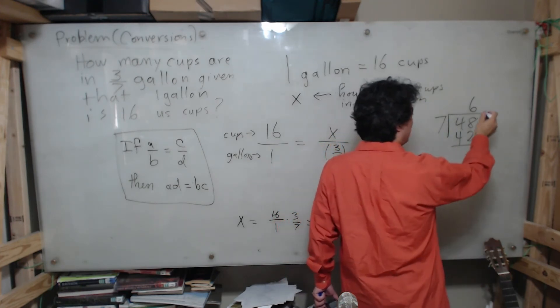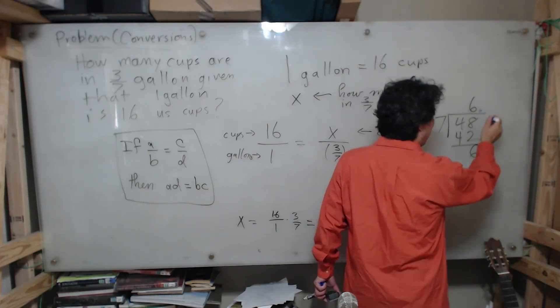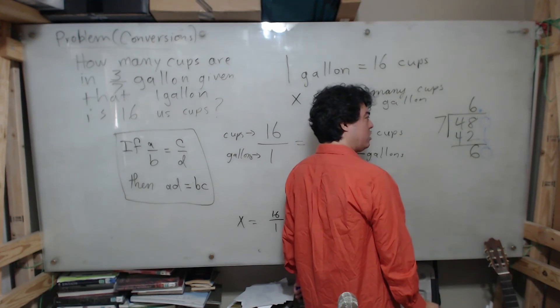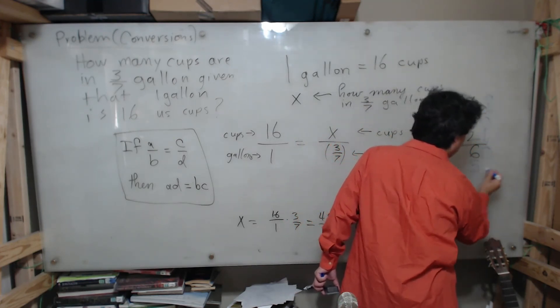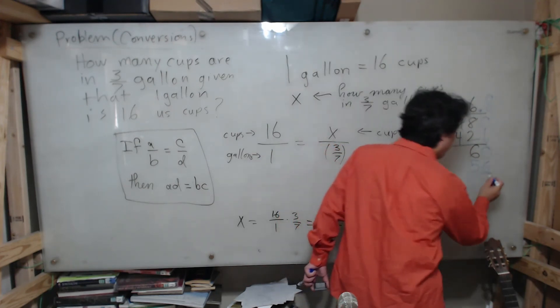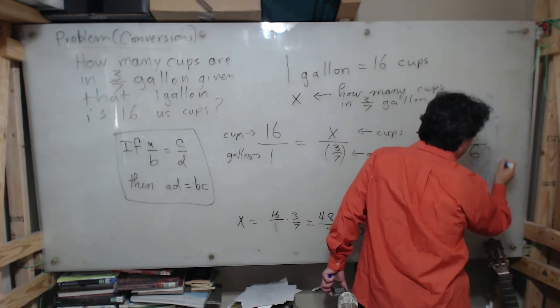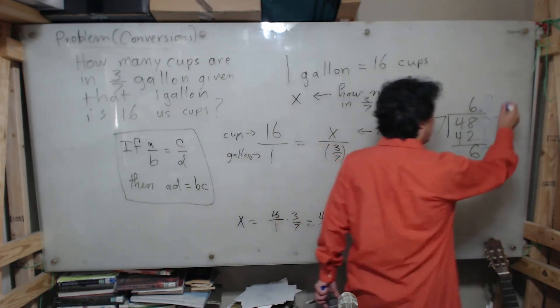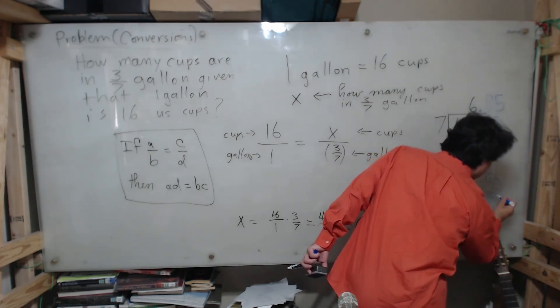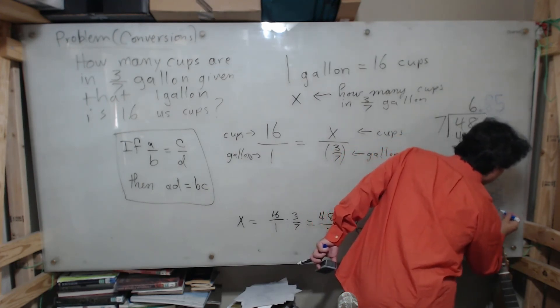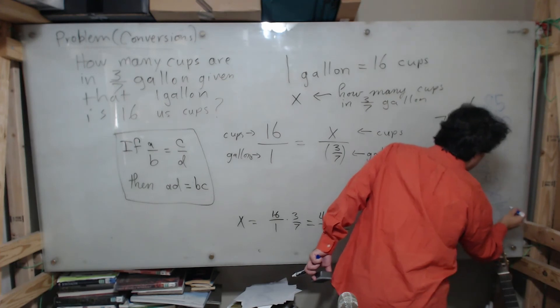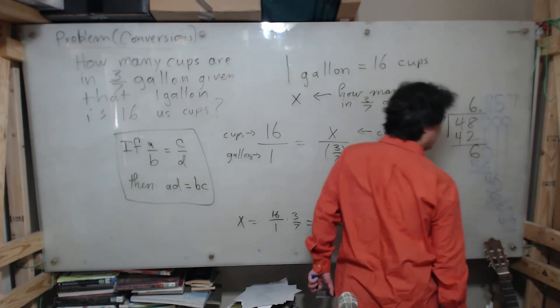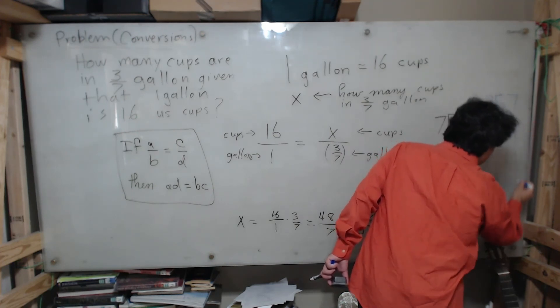I know I can't put 7 into 6 anymore, so what I do once I reach that point is put a decimal point and add a 0 here. I bring this down, so now I ask myself: how many times does 7 go into 60? I know 7 times 8 is 56, so I put an 8 here, I put 56 here. 60 minus 56 is 4. I bring down the 0 and ask myself how many times does 7 go into 40? 5 times because 5 times 7 is 35. I subtract 40 minus 35, that's 5. I add a 0 and drop it. How many times does 7 go into 50? 7 times because that'll be 49. 50 minus 49 is 1. I bring down another 0 which makes it a 10. 7 goes into 10 one time, etc. So I can say now that this is approximately 6.86 cups.